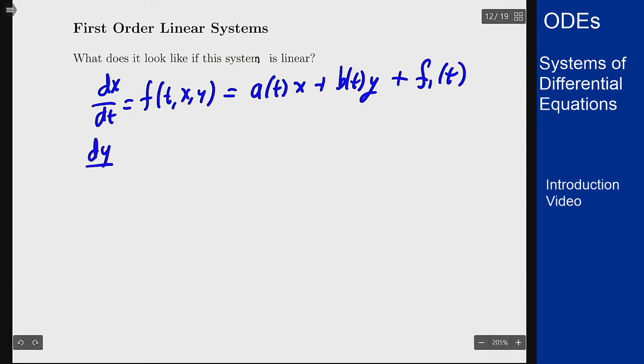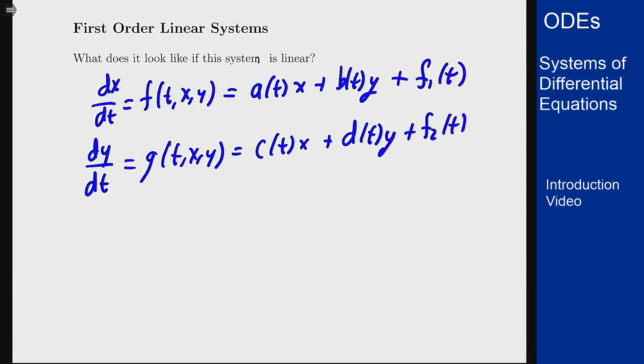And similarly, dy dt which was g of t, x, and y, I know also can be written as some function c of t times x plus d of t times y plus some function f2 of t. That's the general linear first order system.